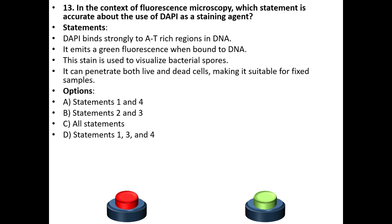Thirteenth question. In the context of fluorescence microscopy, which statement is accurate about the use of DAPI as a staining agent? Statements: DAPI binds strongly to AT-rich regions in DNA. It emits a green fluorescence when bound to DNA. This stain is used to visualize bacterial spores. It can penetrate both live and dead cells, making it suitable for fixed samples.